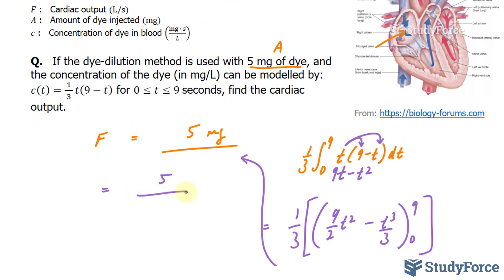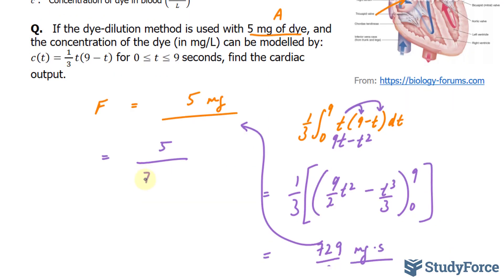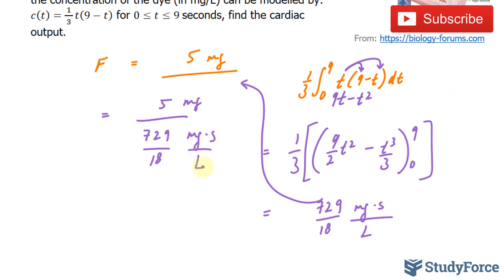So we have 5 over 729 over 18. And usually I don't include units while I'm doing the calculation, but I'm doing it here just to show you how the units will cancel out. mg times seconds over liters. This mg and this mg will cancel out, and these units will become liters per second. I'll use my calculator to evaluate this.